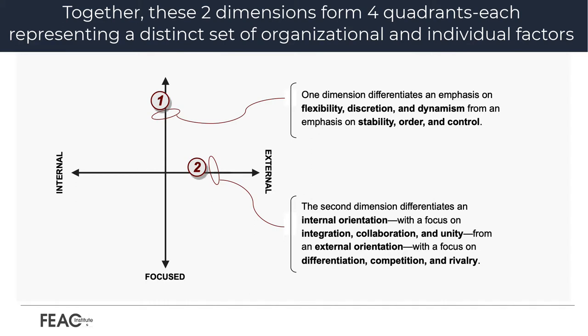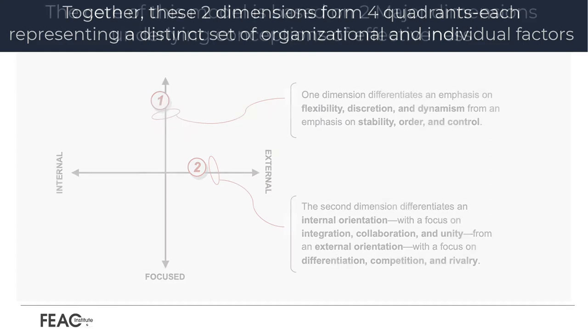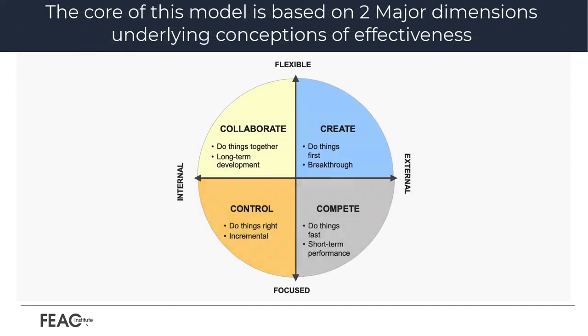The second dimension is organizational preference for structure, which differentiates an internal orientation with a focus on integration, collaboration, and unity, from an external orientation with a focus on differentiation, competition, and rivalry. Together, the two dimensions form four quadrants, with each quadrant having unique and defining sets of values and implications.